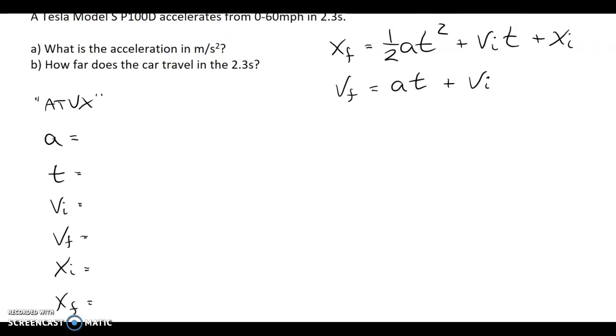Once we identify these variables, let's write in the things we know. In Part A, they ask what is the acceleration. So we actually don't know the acceleration. I'm going to put a line there and put a star next to it. The time they tell you is 2.3 seconds. That's the time it takes to get from 0 to 60. And 0 to 60, those are our speeds. If we're moving in a direction, that speed is the same as velocity.